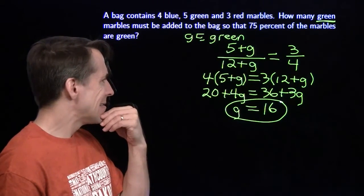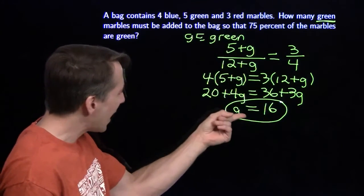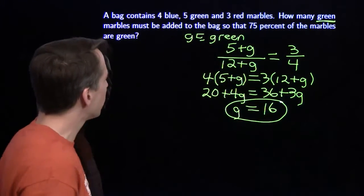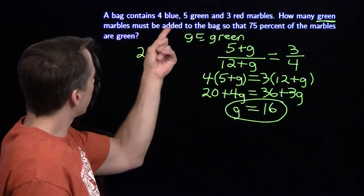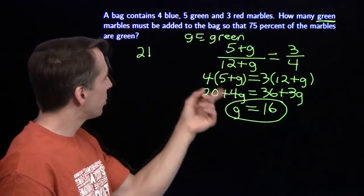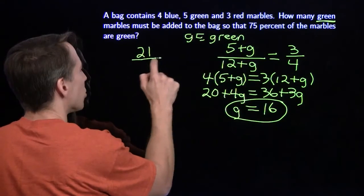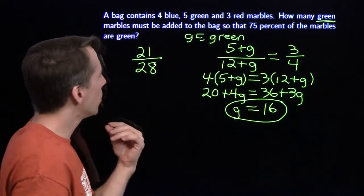I like to check my answers too. So I'm going to check this out and say, if I added 16 green marbles in here, I'm going to have a total of 21 green marbles out of, let's see, I have 4 blue, 3 red. That gives me 7 plus the 21 greens, which gives me 28. And sure enough, 21 out of 28, that's 75%. That's three quarters.